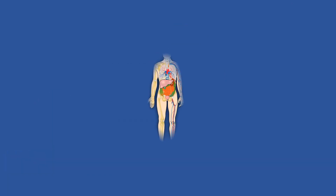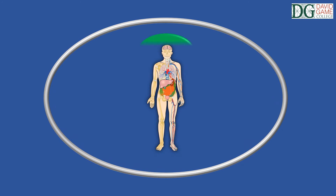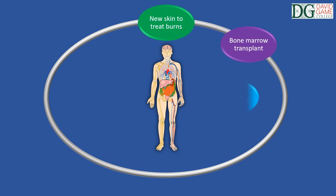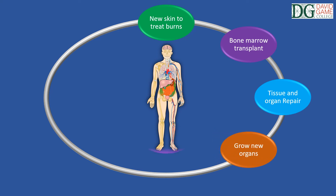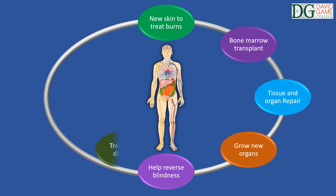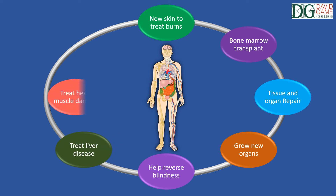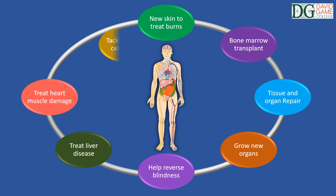Stem cells have various therapeutic applications, including generating new skin to treat skin burns, and for bone marrow transplants. They are also used in regenerative medicine for tissue and organ repair, or to grow new organs such as the bladder, to help reverse blindness, to treat liver disease or damaged heart muscles, as well as for tackling sickle cell disease.